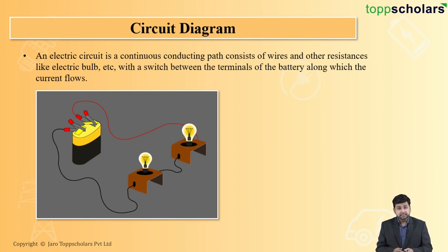For example, if you observe here, there is a battery. The batteries are connected to the bulb with the help of a wire, and because of that, the current flows. This entire phenomenon or this entire system is called a circuit diagram.